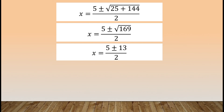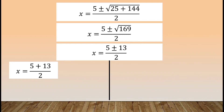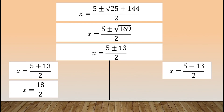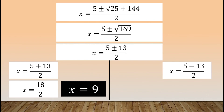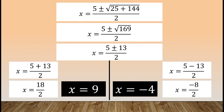We solve the resulting linear equations by separating positive and negative 13, giving us two possible solutions. First: x = (5 + 13) / 2 = 18 / 2 = 9. On the other hand, the second solution: x = (5 - 13) / 2 = -8 / 2 = -4. Therefore, the solutions obtained are 9 and -4.